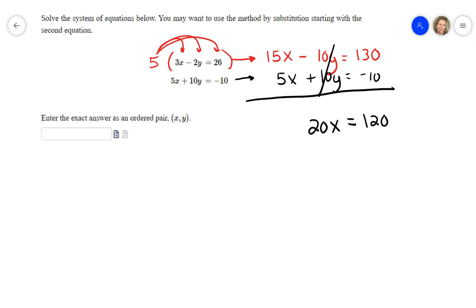Then I'm gonna divide both sides by 20, and x is 6 because 6 times 20 is 120. Now I have to find y, so I'm going to take x equals 6...